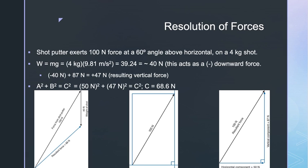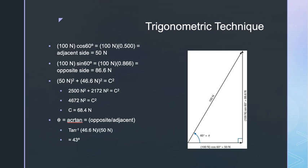The process of determining what two force components add together to make a resultant force is called force resolution. We need a method beyond graphical techniques for solving this problem. Besides the Pythagorean theorem, there are other relationships — sine, cosine, and tangent — between the sides and angles of right triangles. Let's use these relationships to resolve the 100 Newton force the shot putter exerts into horizontal and vertical components.